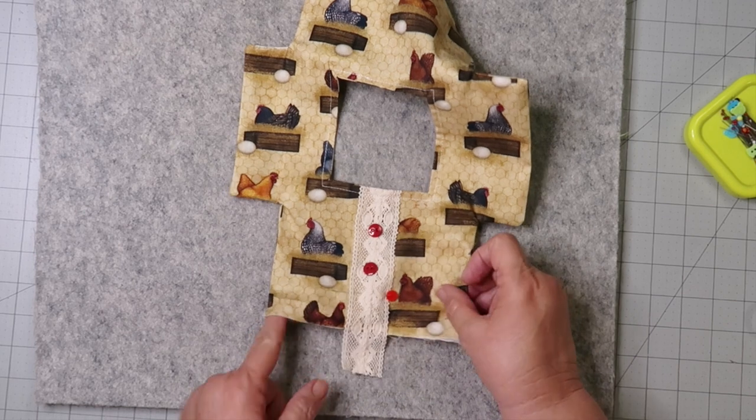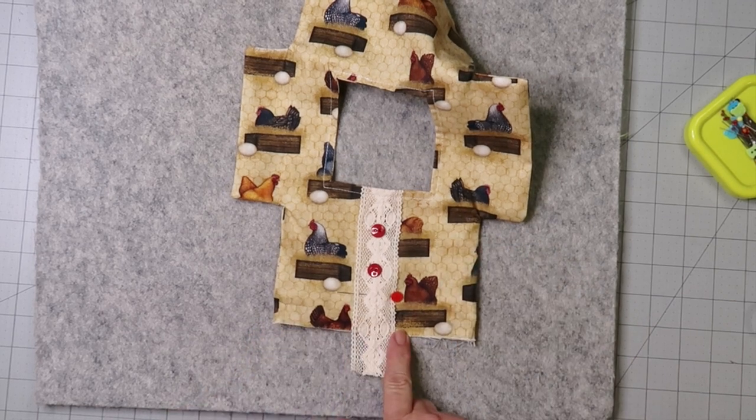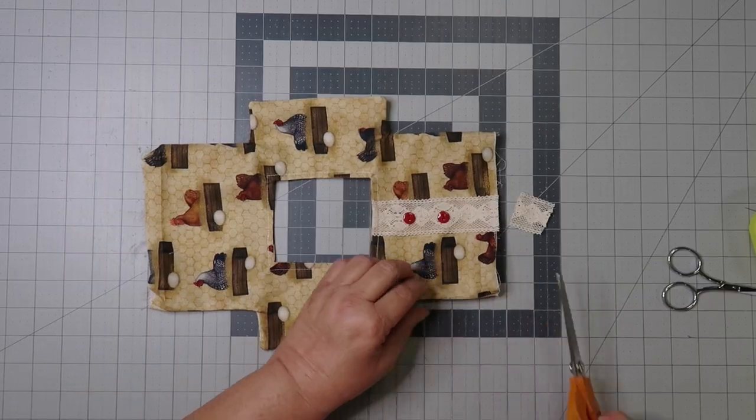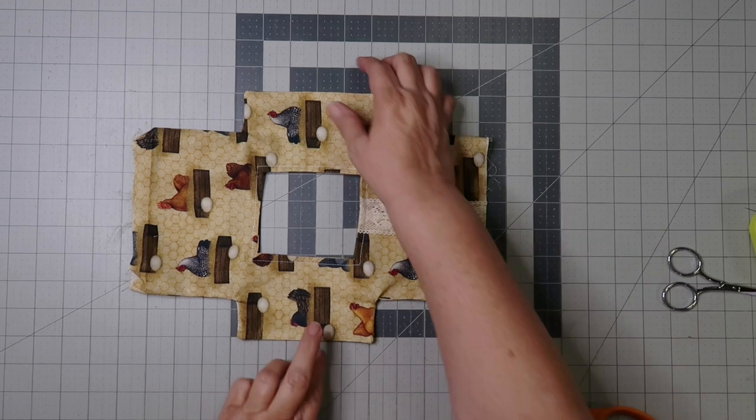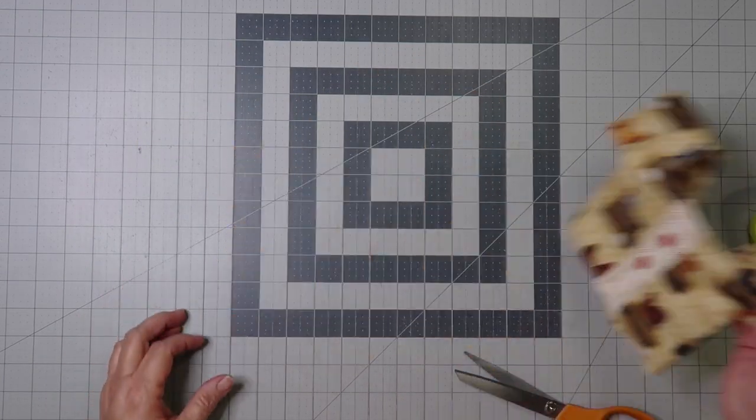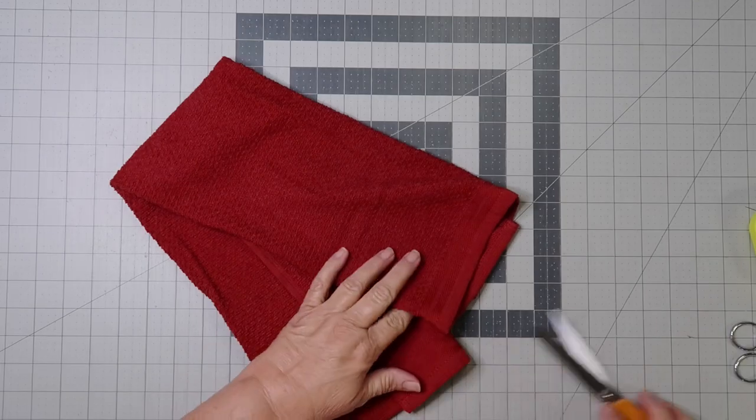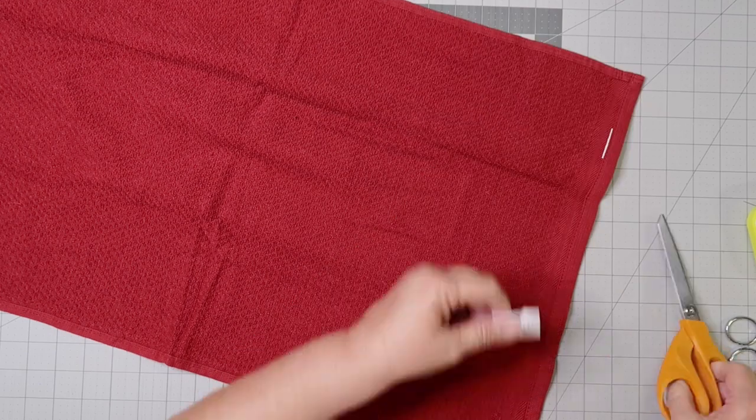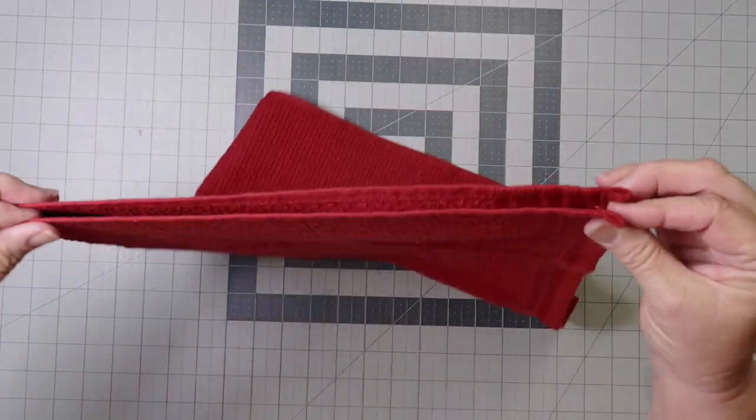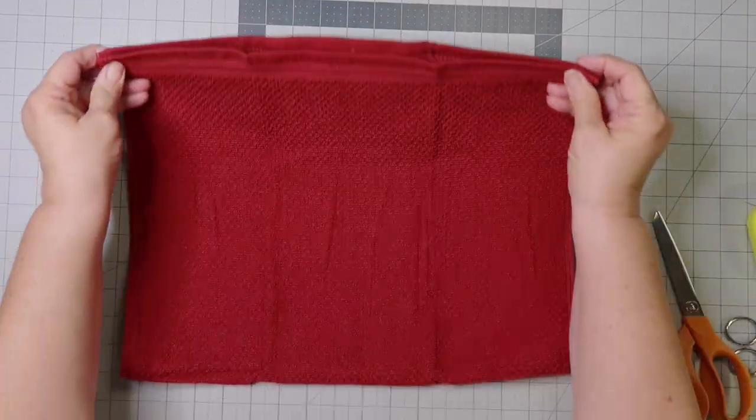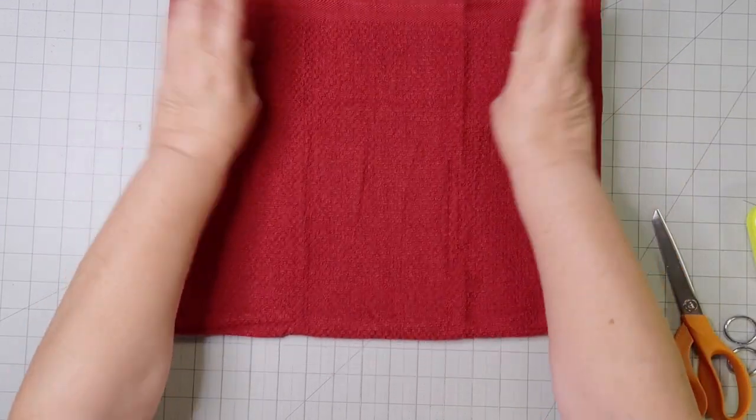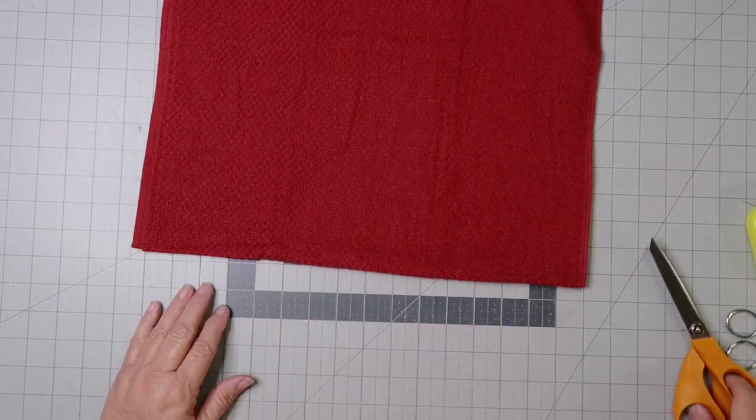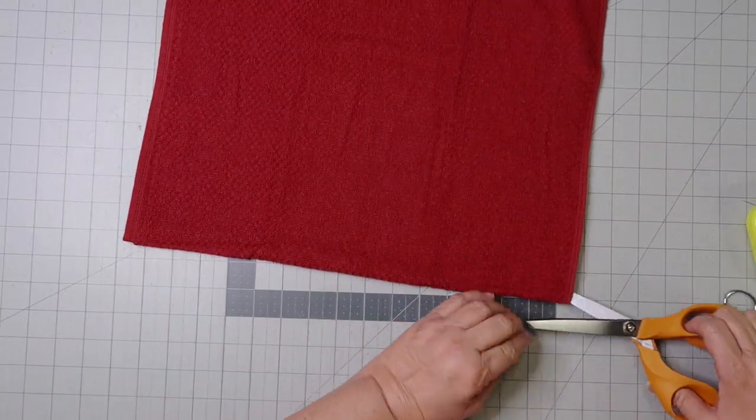Now with just the top piece of the fabric, I'm going to pin and sew the trim. Now it's time to prepare the kitchen towel. Cut in half and serge. If no serger is on hand, be sure just to zigzag.